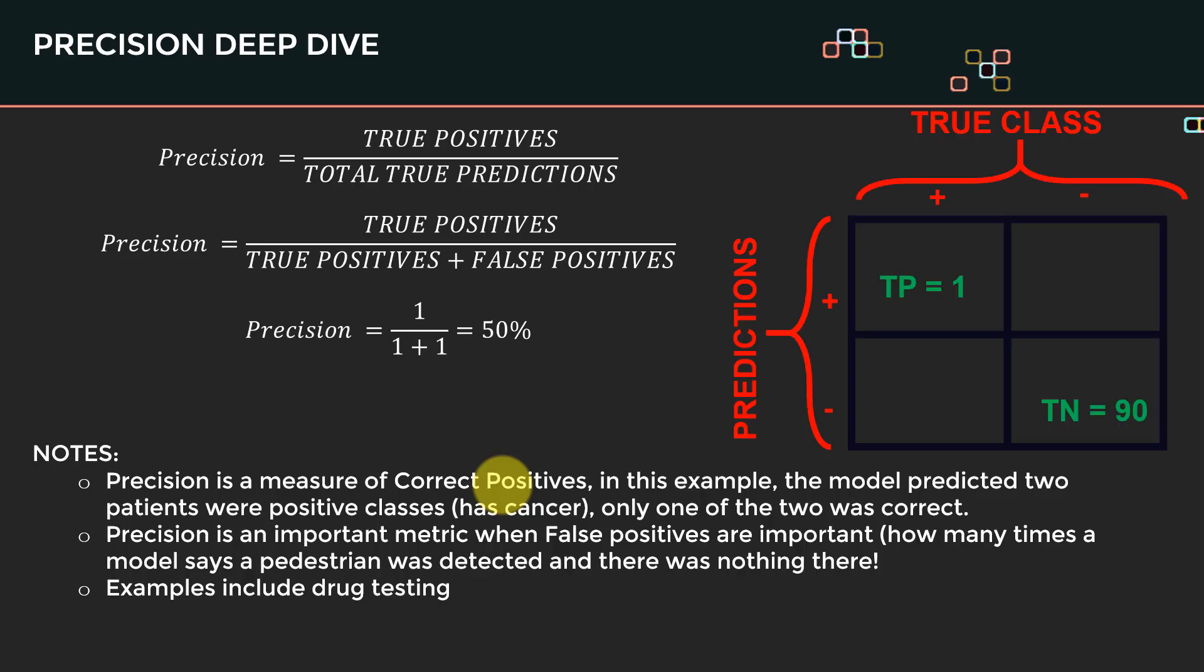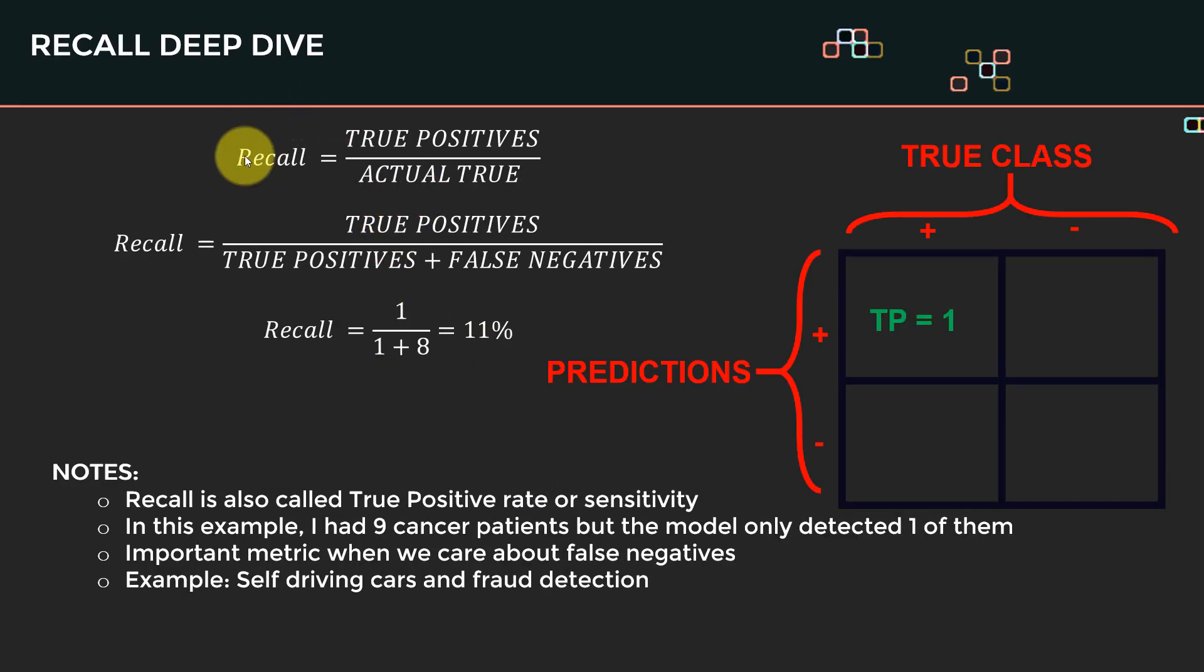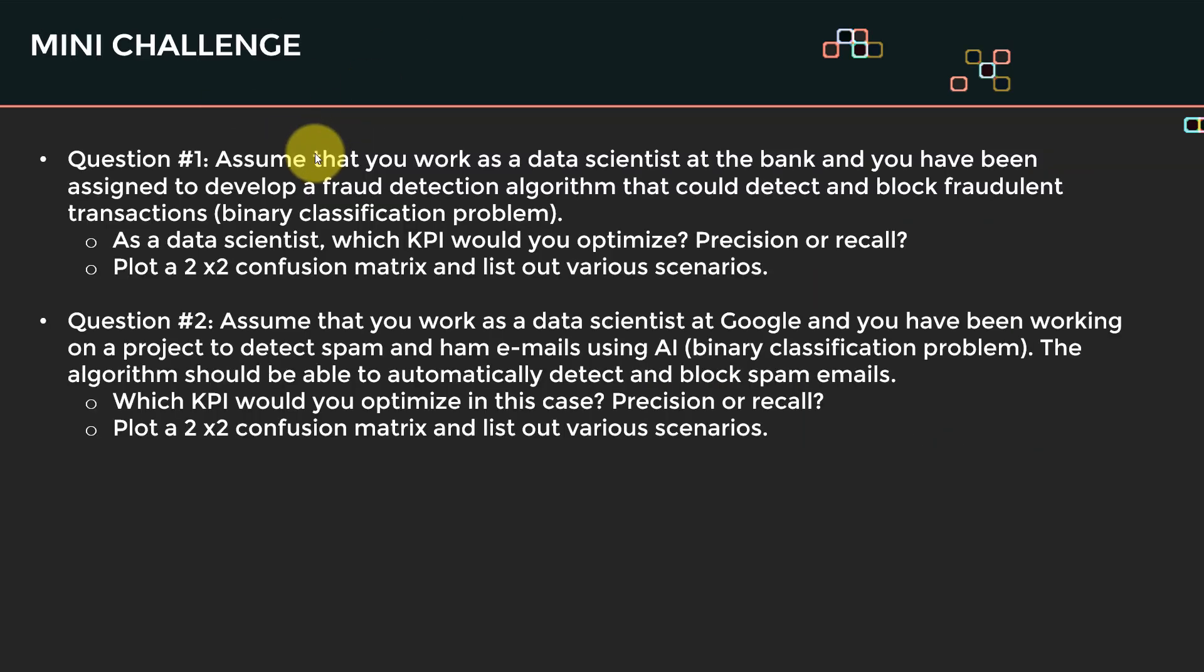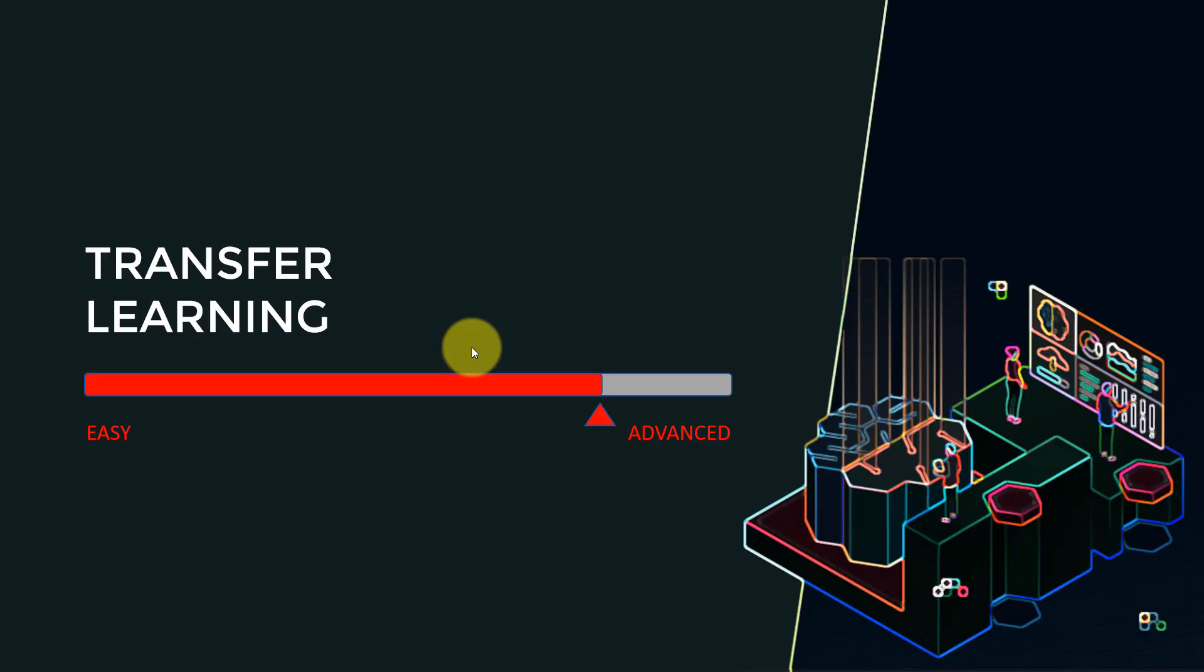I hope you guys were able to figure it out when we compared the performance of the model when we try to perform fraud detection at a bank, or when we do spam, ham, email classification. So the next topic that I wanted to cover right now,